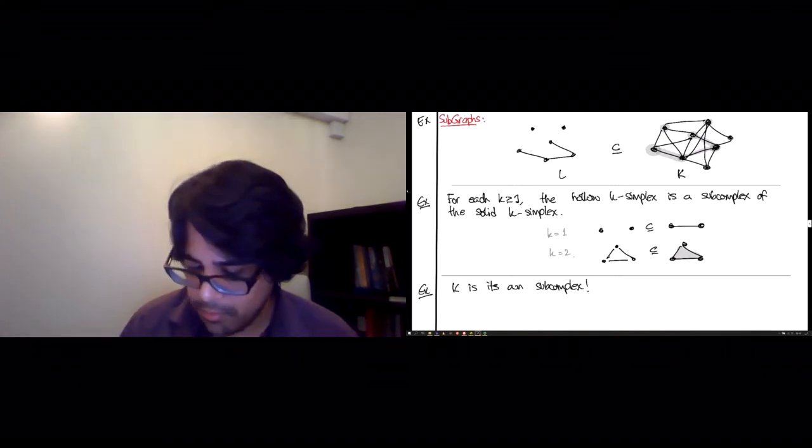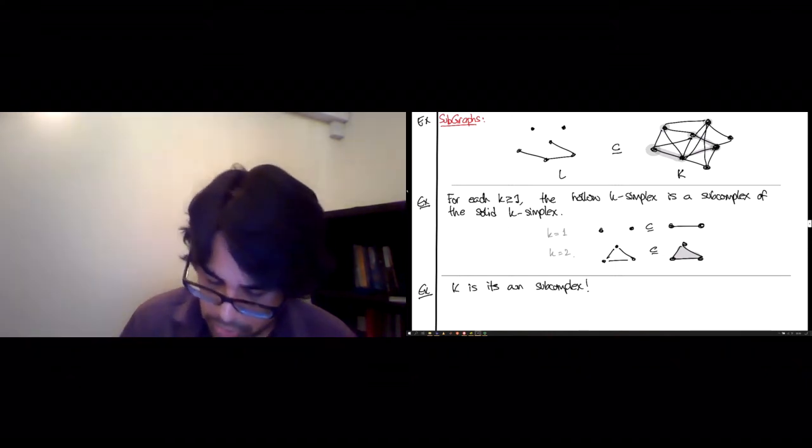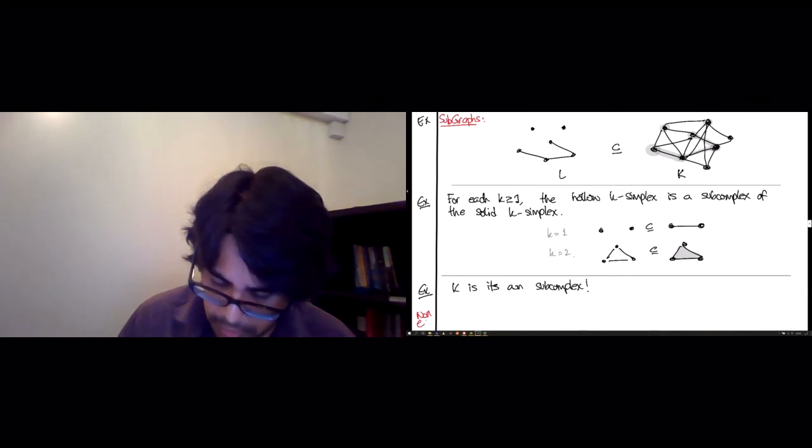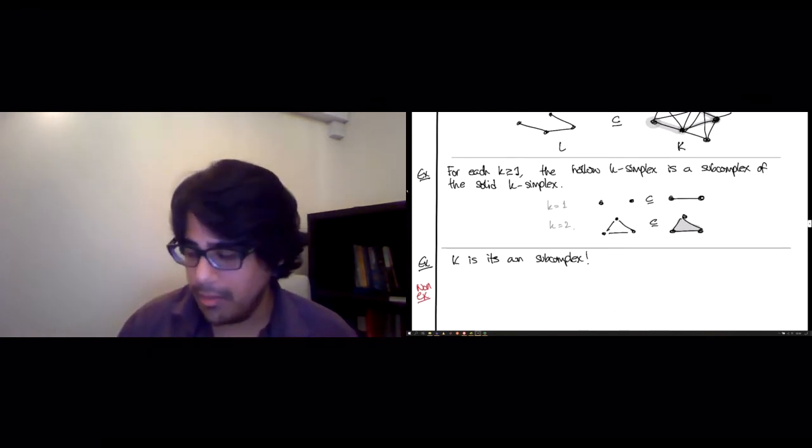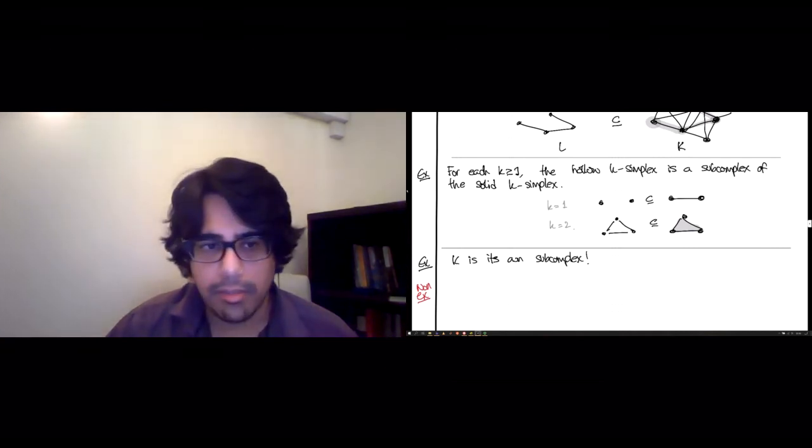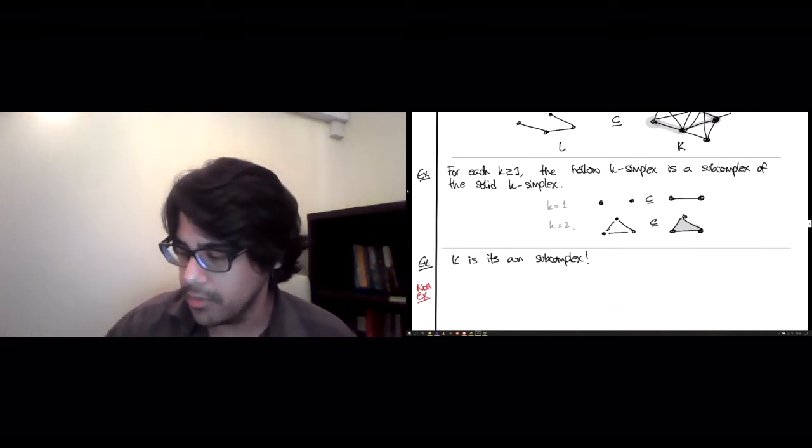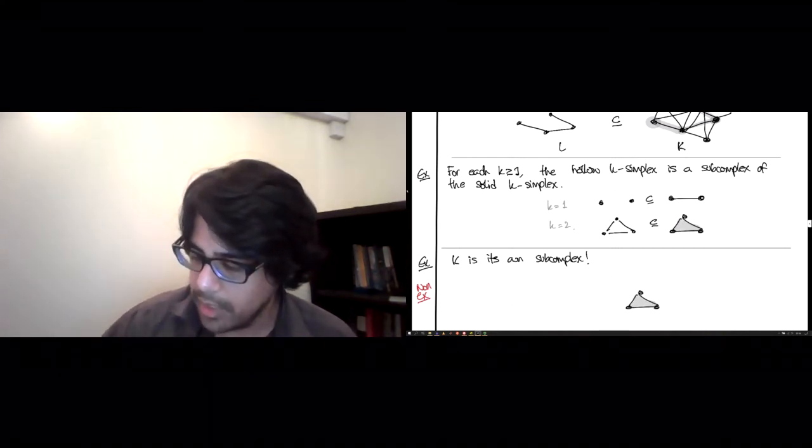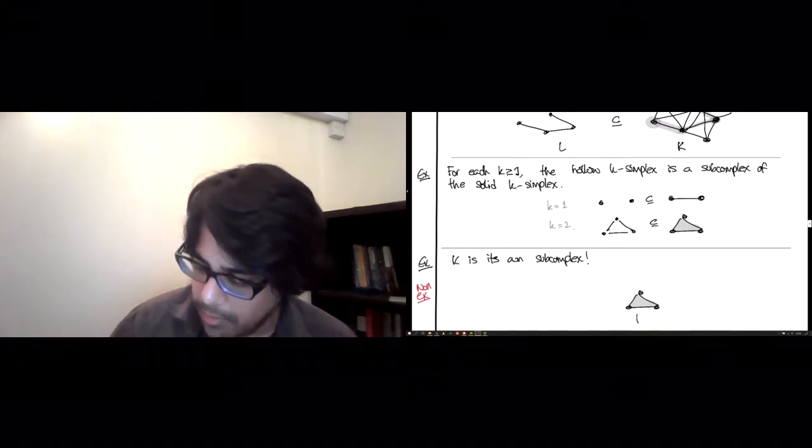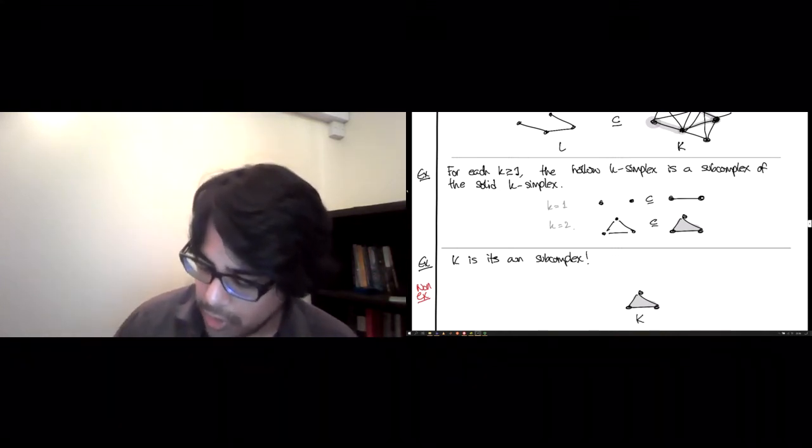And maybe just to really drive the point home, we should see a non-example as well. So what would it take to find a non-subcomplex, a subcollection of simplices that's not a subcomplex? And I think we can do it just with this K here.